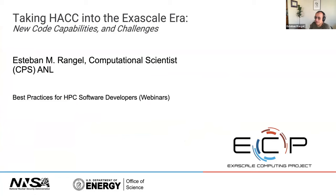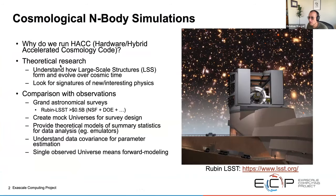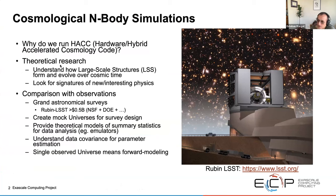My name is Stephen Rangel and I work on the HACC code as a computational scientist at Argonne. So what is HACC? HACC is a Hardware Accelerated Cosmology Code. We run HACC to further theoretical research in cosmology, to help understand the large-scale structure of the universe, and look for signs of new and interesting physics.